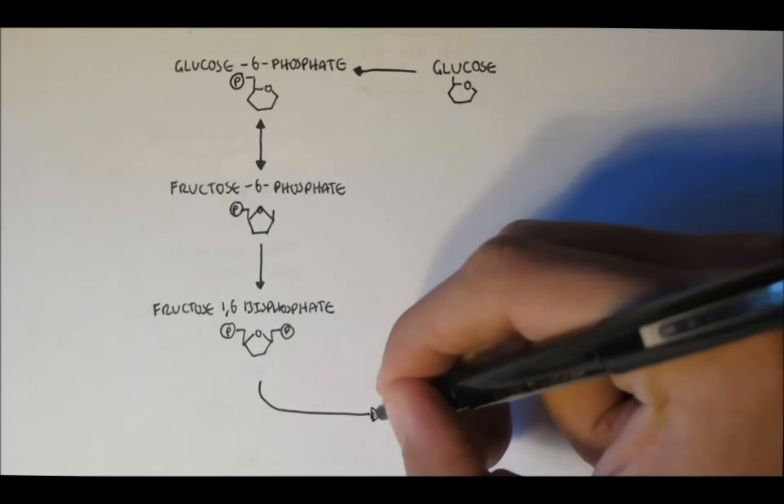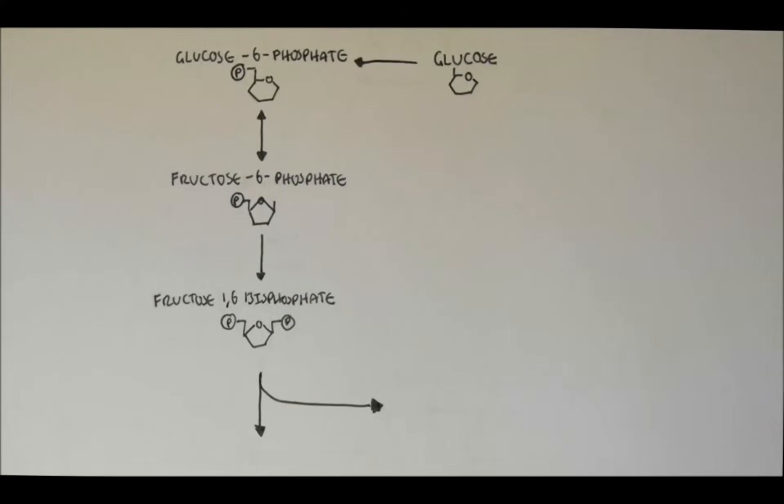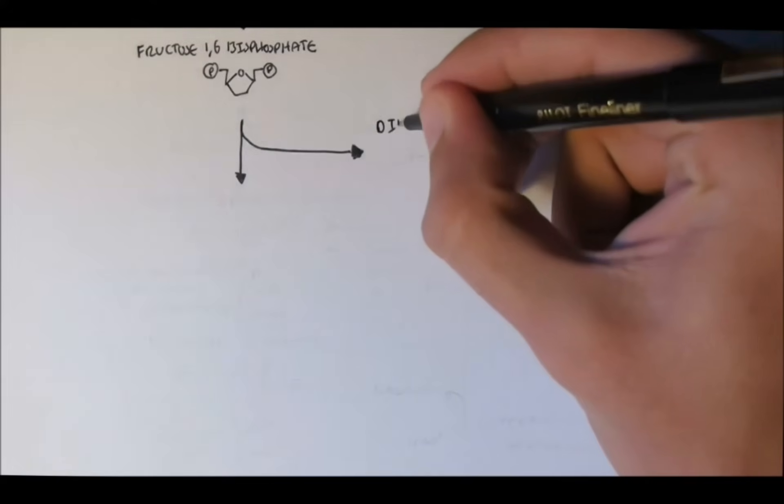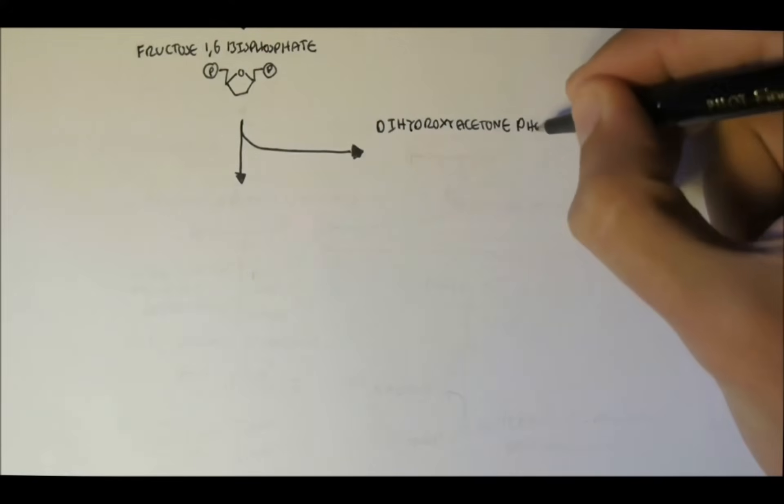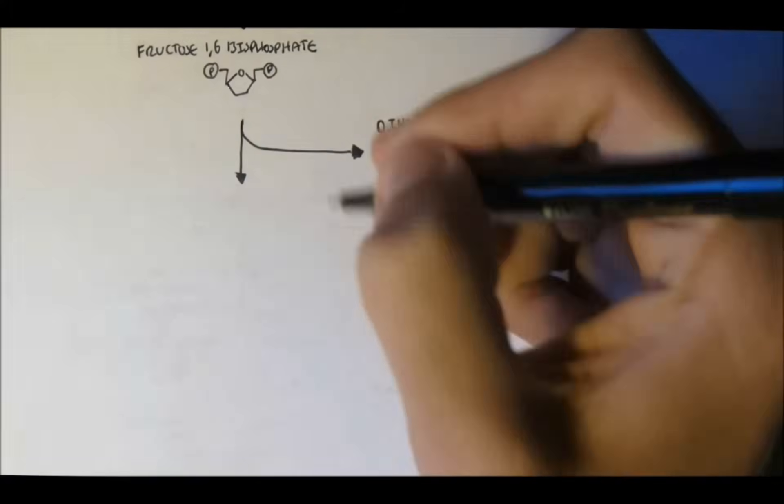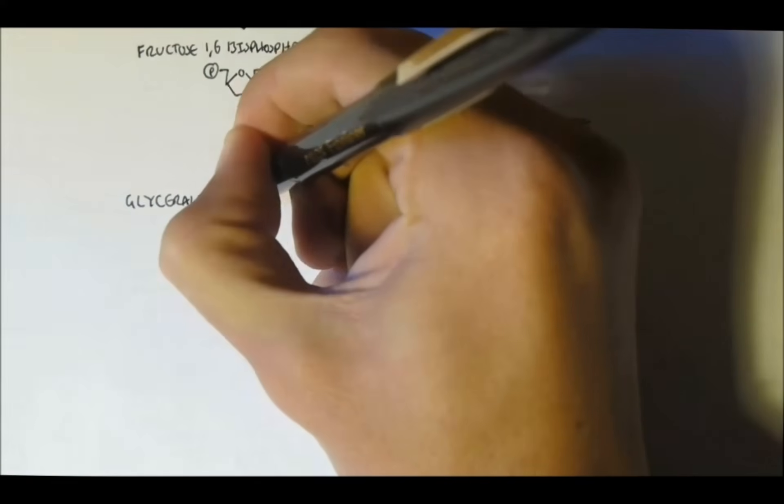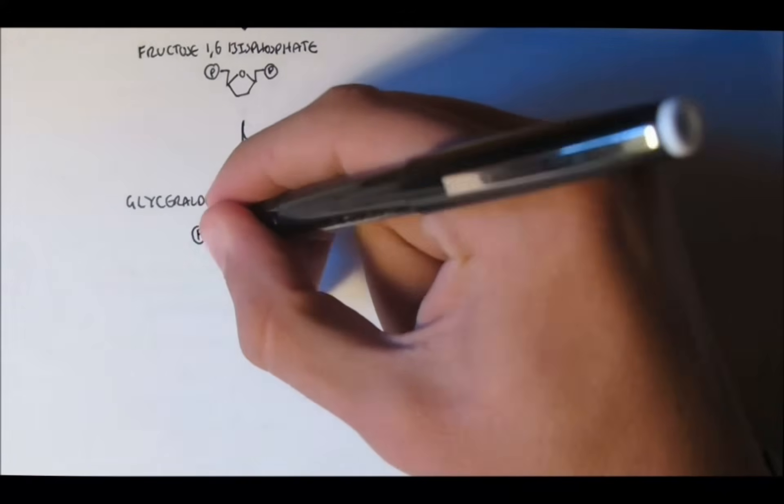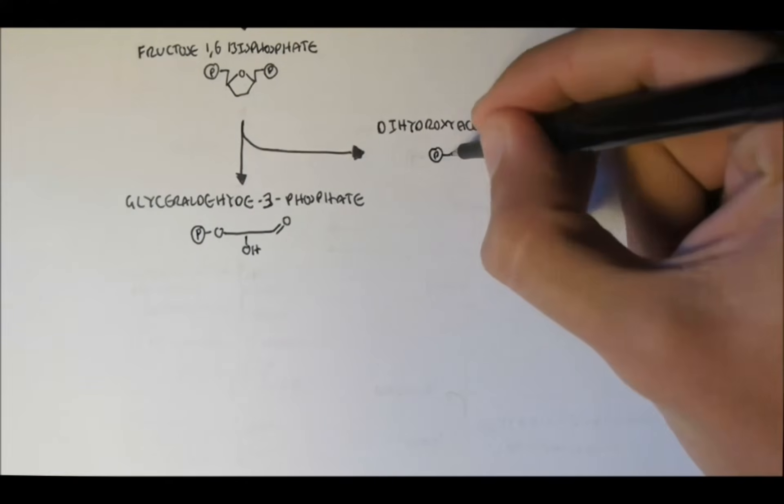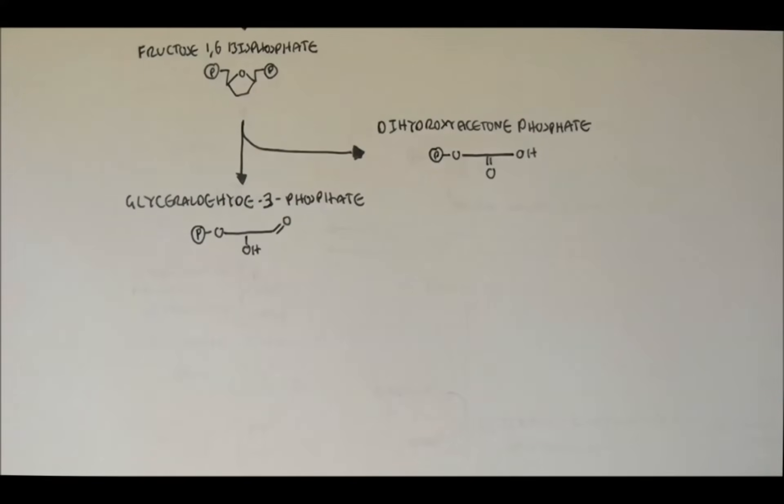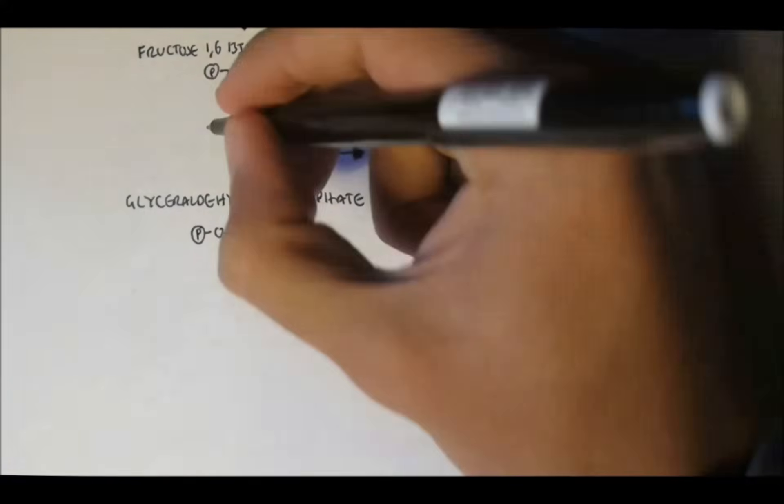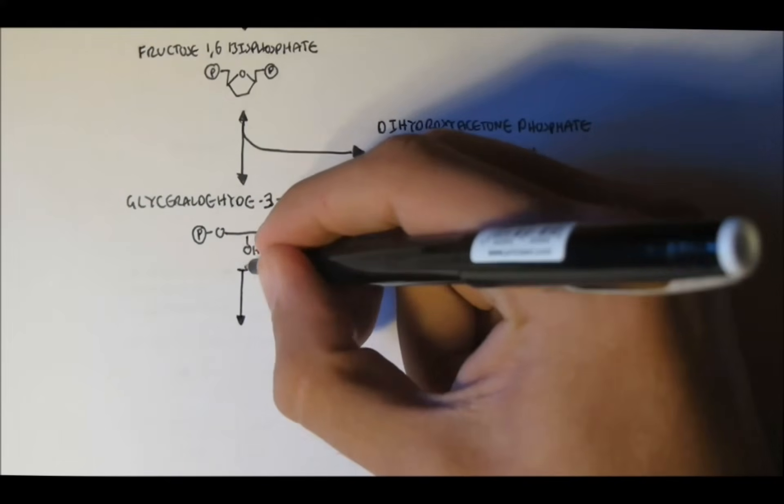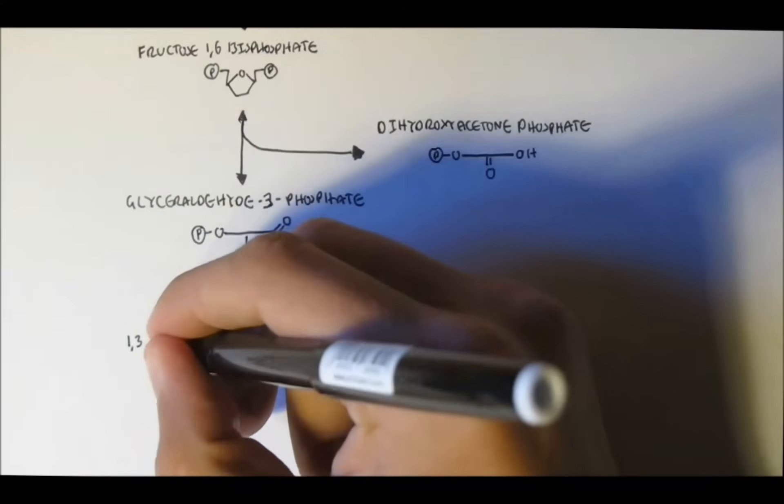Fructose-1,6-bisphosphate will then split in half to form two structures. One of them is called dihydroxyacetone phosphate, and the other one, glyceraldehyde-3-phosphate. Now the difference between the two is that glyceraldehyde-3-phosphate is in an aldehyde form, with the oxygen coming off the end, a double-bonded oxygen coming off the end. And the dihydroxyacetone is in a ketone form, with a double-bonded oxygen coming out in the middle. Now in glycolysis, dihydroxyacetone phosphate will typically convert to glyceraldehyde-3-phosphate to continue glycolysis, but I'll show you this later on.